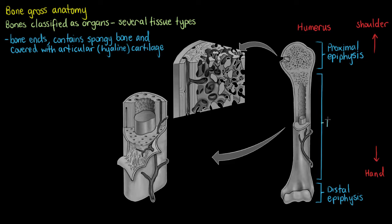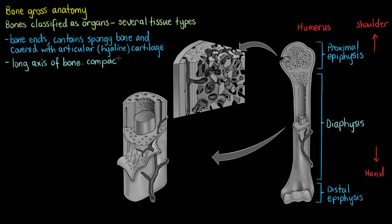The middle portion of the bone is known as the diaphysis. The diaphysis is the long axis of the bone and has a central cavity within it. Because the diaphysis is much thinner than the epiphysis, it needs to be made of something stronger — that's called compact bone, which has a much denser structure and can support more weight than spongy bone.